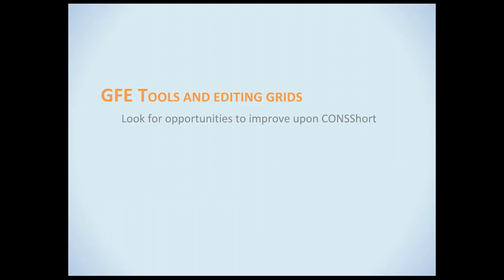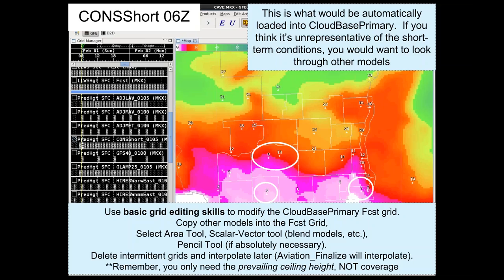Moving into GFE tools and how to edit grids: when looking at what CONSHORT has put in for cloud-based primary, you can do many things. You can copy another model you like better into the forecast grid, use the select area tool, use a scalar/vector blend-of-models tool, or use the pencil tool. Another approach for improving or worsening conditions is to delete some intermittent grids, edit key ones, and interpolate later — aviation finalize can interpolate these grids. On a diurnal cumulus day, your sky cover grid determines coverage, not your cloud-based primary, so you can set the whole grid to, say, 5,000 feet.